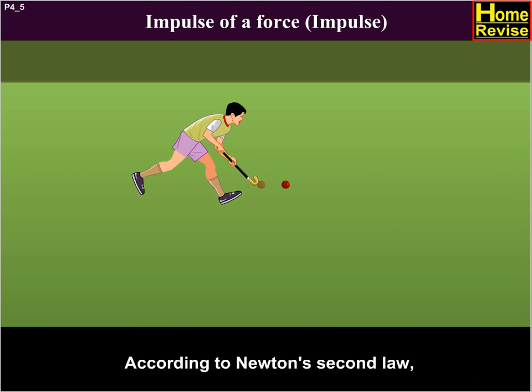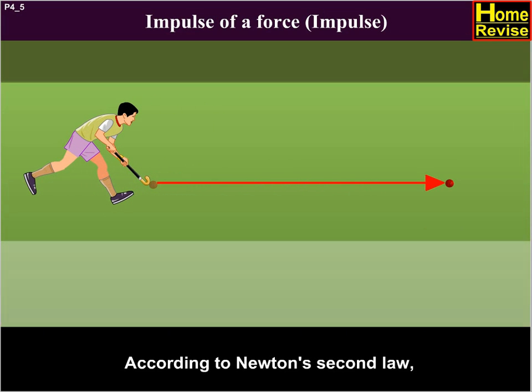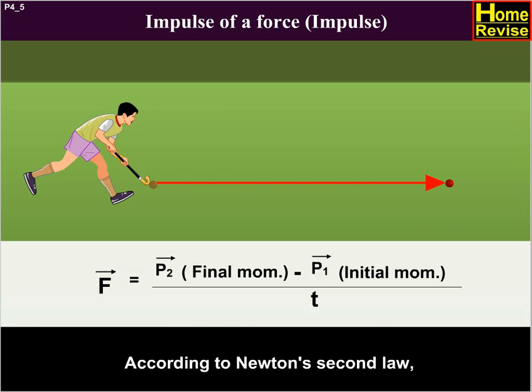According to Newton's second law, vector F equals vector P2 minus vector P1 upon t.